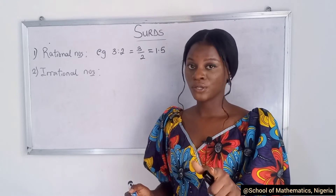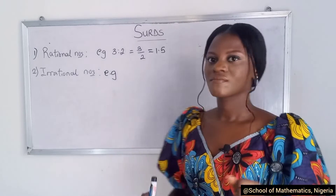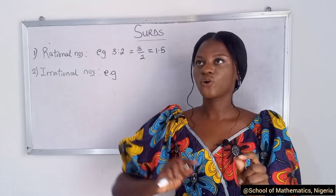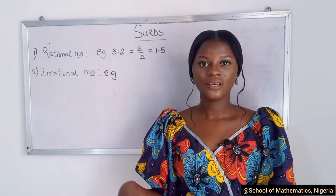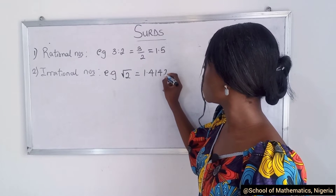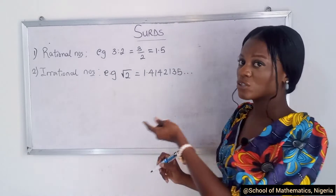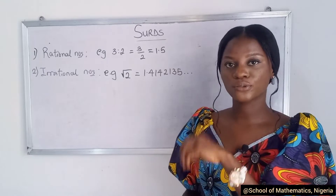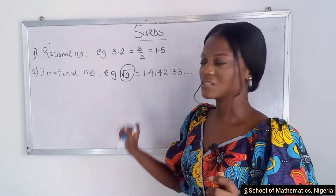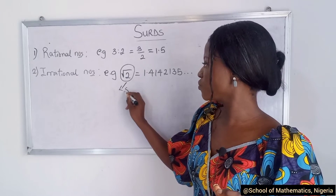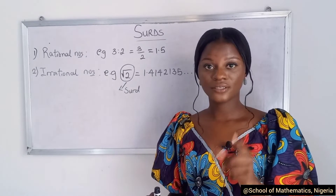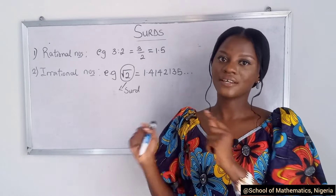For irrational numbers, they are also quotients, but they don't have an exact number. You could have a value that is continuous with no end to it. For example, √2 is 1.4142135... and it continues with no end. These are irrational numbers because their answers just keep going. In mathematics, we would rather just leave it as √2 instead of writing the decimal value. This is what you refer to as a surd — values that have no end. Note that not all irrational numbers are surds, but all surds are irrational numbers.